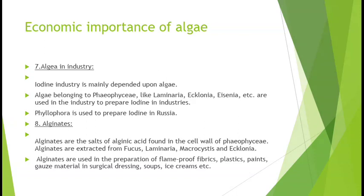Samudri shewalon ko jalakar jo raakh prapt hoti hai uske dwara alkalis banaye jaate hain. Rhodophyceae jaisi Chondrus aadi se carrageenan prapt hota hai — ye ek jatil polysaccharide hai. Carrageenan ka upyog — medicines, tooth paste banane, bakery industry, paneer, paper, kapda udyog aur rang banaane mein kiya jaata hai. Diatoms ki fossil ke roop mein payi jaane wali koshikaon ki bitti (diatomite) ka upyog chini nirman aur saabun nirman mein kiya jaata hai.